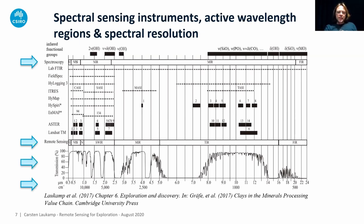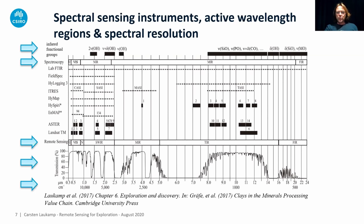We are fortunate that many minerals of interest — clay minerals, chlorites, epidotes, white micas — show diagnostic absorption features within the atmospheric windows. Everything labeled OH on the diagram means we can map a clay mineral, actinolite, or epidote, for example. In the thermal infrared is where we can identify minerals that don't contain hydroxyl groups, like quartz, garnet, apatite, carbonates, and other minerals. So different atmospheric windows allow us to map different minerals.